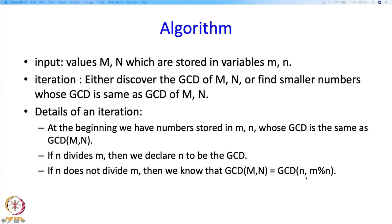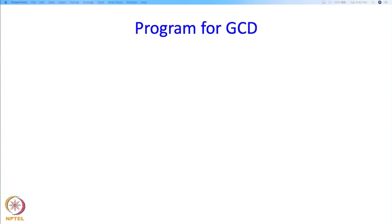So as a result we have changed the numbers n and m mod n, we have changed the numbers which we have in our hand. But we know that their GCD is still the same as the GCD that we wanted. So what we can do is we can now store n and m mod n in m and n. So here we are effectively assuming that the larger number is always in m and the smaller number is in n. So that is what the algorithm is.